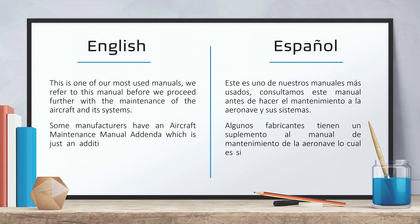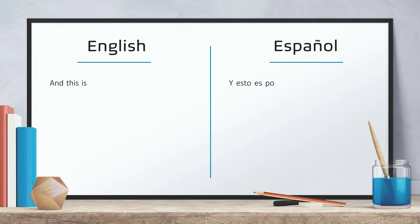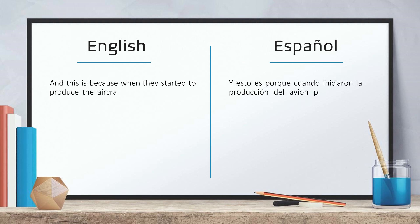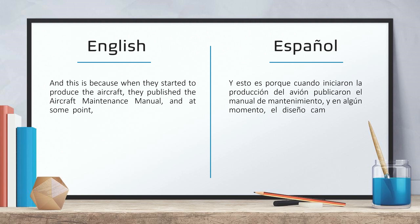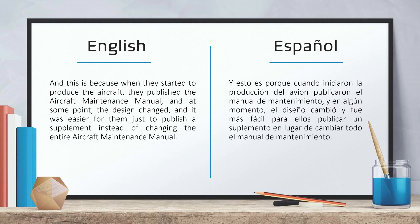We refer to this before we proceed further with the maintenance of the aircraft and its systems. Some manufacturers have an aircraft maintenance manual addendum, which is just an additional supplement for the aircraft maintenance manual. This is because when they started to produce the aircraft, they published the aircraft maintenance manual, and at some point the design changed and it was easier to just publish a supplement instead of changing the entire aircraft maintenance manual.